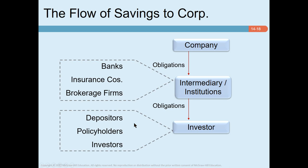In the United States, insurance companies are more important than banks for the long-term financing of business. They hold massive investments in corporate stocks and bonds and often make long-term loans directly to corporations. Most of the money for these loans comes from the sale of insurance policies. For example, if you buy a fire insurance policy for your home, you pay cash to the insurance company, which invests it in financial markets. In exchange, you receive a financial asset.